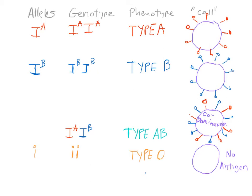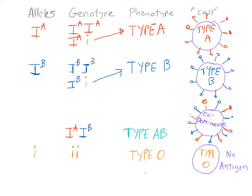There are two more genotypes possible. One is an Ia allele paired with the recessive little i allele — this genotype also yields type A blood. Then there is the genotype where one allele is Ib and the second allele is the recessive i — this is also type B blood. So, if the cell has type A antigen sticking out it's type A; type B antigen means type B; both antigens means type AB — an example of co-dominance; and neither antigen means type O blood.